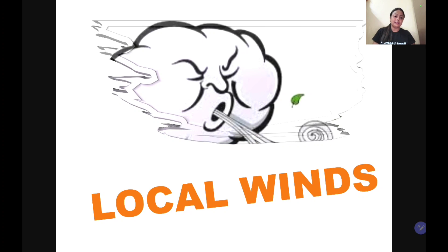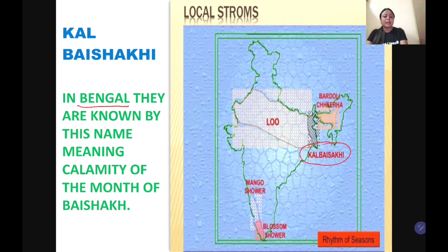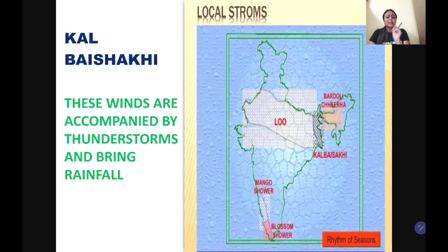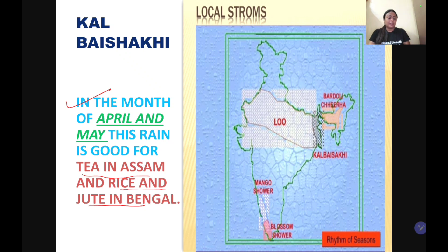There are some local winds that affect different parts of the country. The first is Kaal Baisakhi — in Bengal, this name means 'calamity of the month of Baisakhi.' These are local storms accompanied by thunderstorms and bring rainfall in April and May, which is actually good for tea in Assam and for rice and jute in West Bengal.